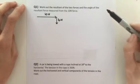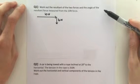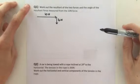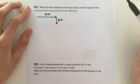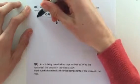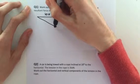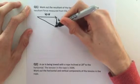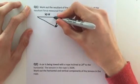Question one says work out the resultant of the two vectors and the angle of the resultant force measured from the 10 newton force. So how do you do that? So the resultant is going to be this. That was a bit off so let's draw that vector like that. The resultant is going to be this hypotenuse if this is a right angle triangle.